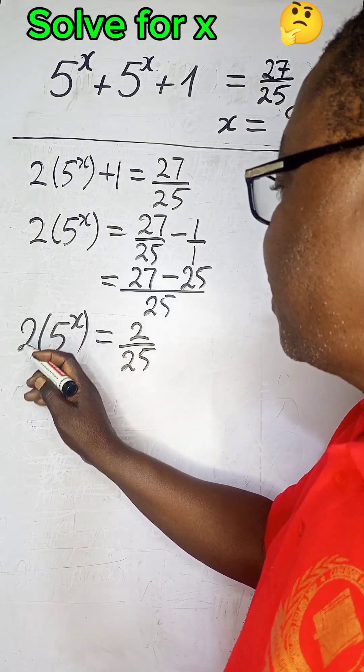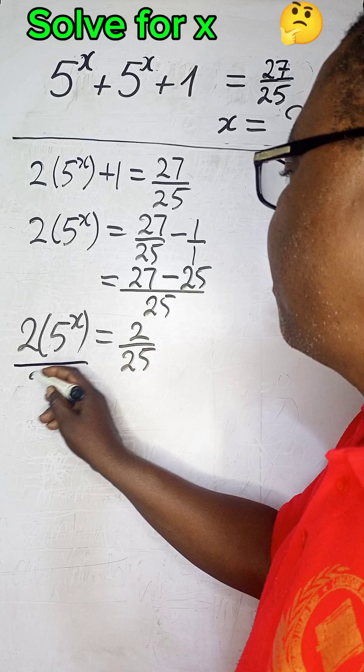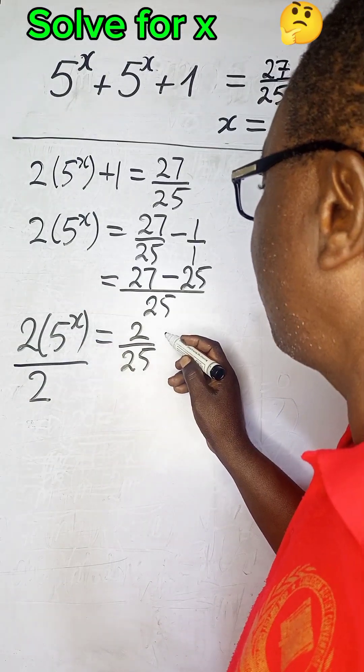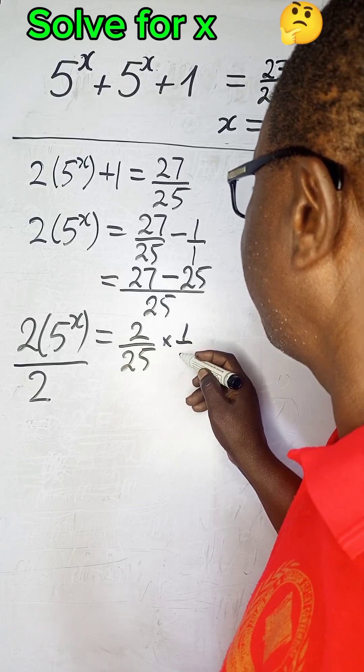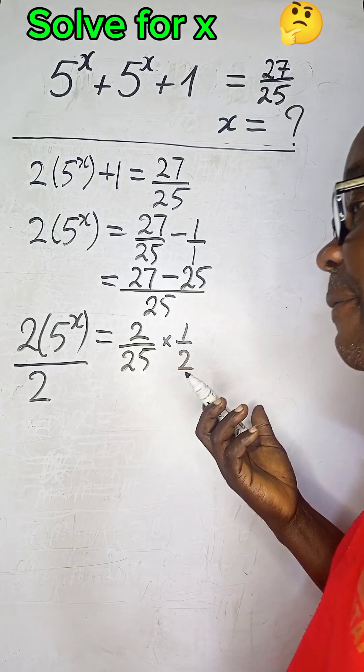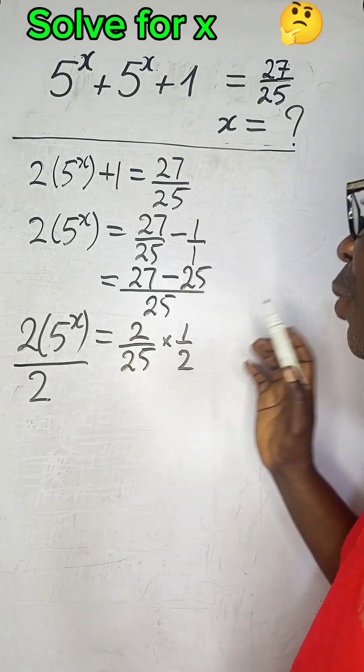If we do this operation on one side, we must respect equality by doing the same thing on the other side. Divided by 2 is the same as multiplied by half.